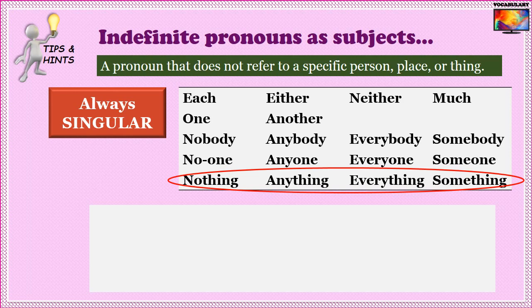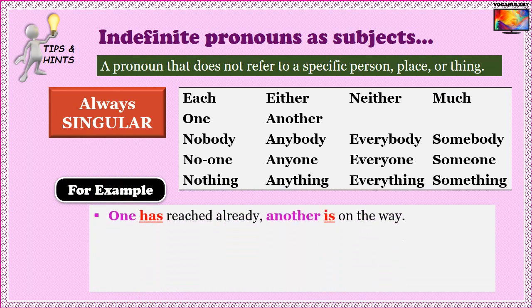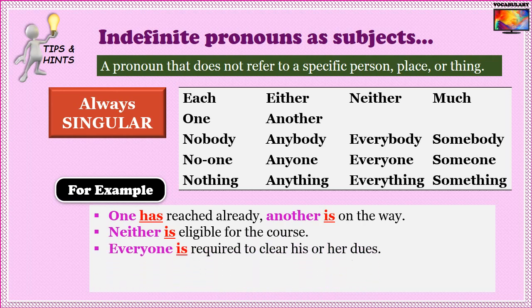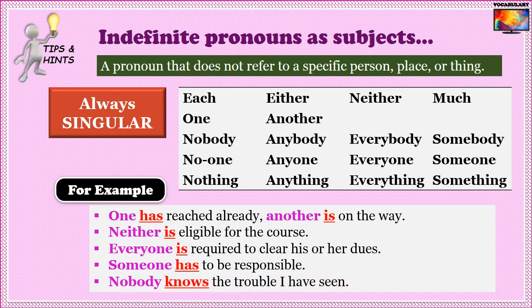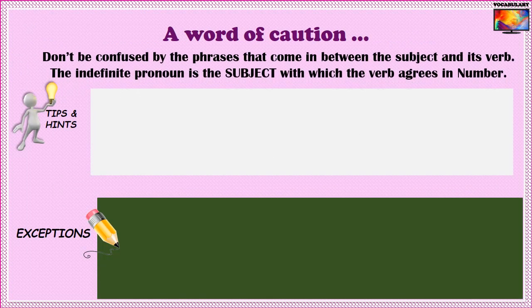Let's apply the concept. Examples: 'One has reached already.' 'Another is on the way.' 'Neither is eligible for the course.' 'Everyone is required to clear his or her dues.' 'Someone has to be responsible.' 'Nobody knows the trouble I have seen.' All the indefinite pronouns highlighted needed singular verbs. A word of caution: sometimes these indefinite pronouns are followed by prepositional phrases that come in between the pronoun and the verb — just cross out that phrase mentally and the subject gets revealed.